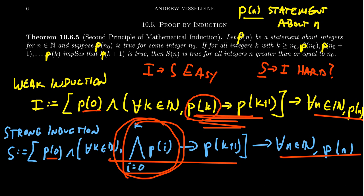When it comes to strong induction, its advantage is that the inductive hypothesis is stronger — you have it true for all previous cases, not just the immediate predecessor. That can be extremely useful in proofs when regular induction doesn't have that. It really comes down to writing style. If I only need the immediate predecessor to prove my inductive step, I'll use weak induction. But if I want to use more predecessors than just the immediate one, I'll use strong induction.